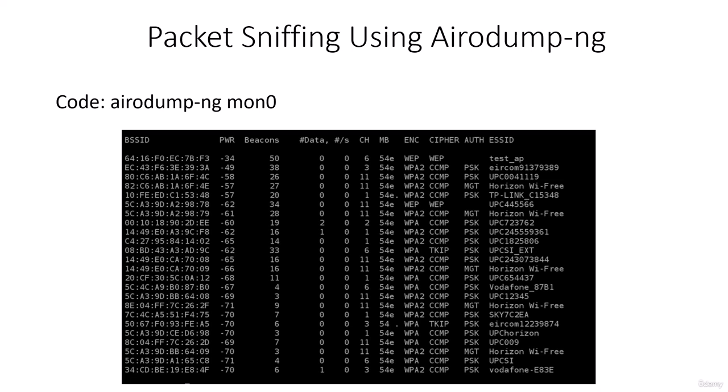After typing this command, it starts listing all the networks around us. Another use of airodump-ng is to identify all networks nearby and all the devices connected to those networks. It will continue to run, so you have to stop it. To stop it, just press Ctrl+C on your Linux machine.